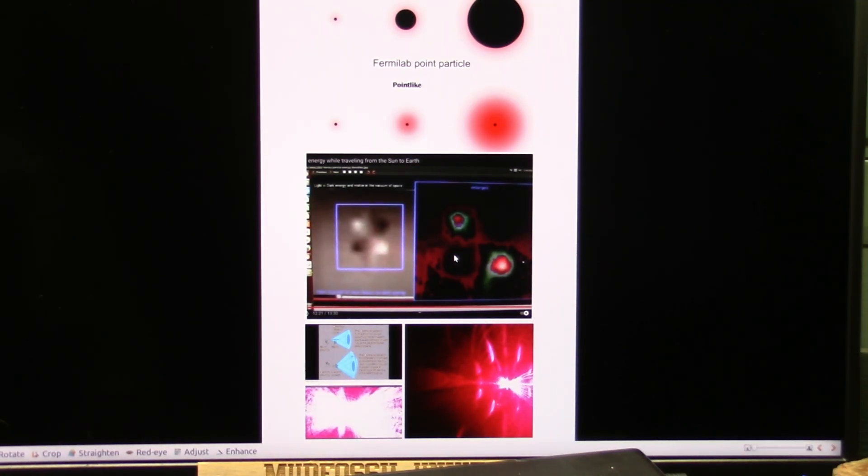And the faster they spin, the more blue shifted you've got. The slower they spin, the more red shifted you've got.